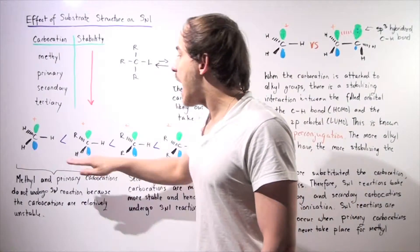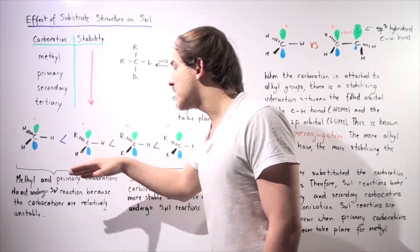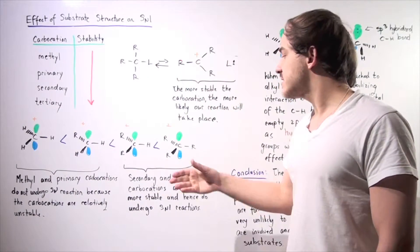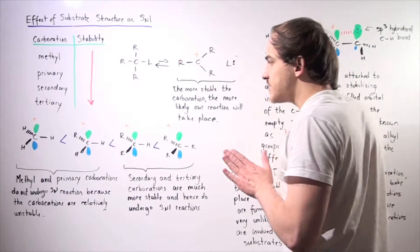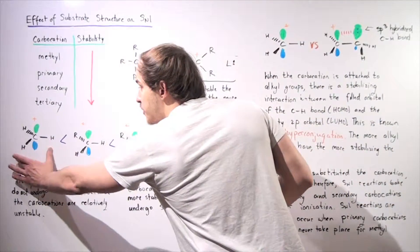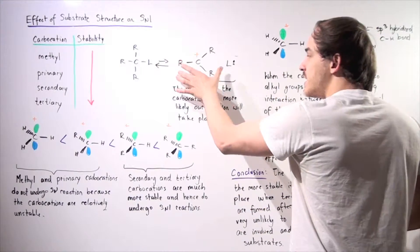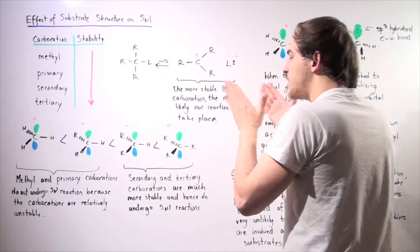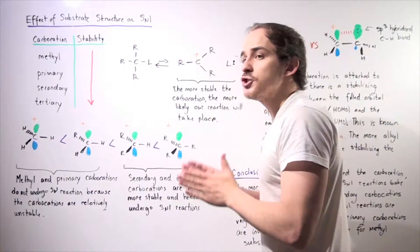So that means our methyl carbocations are less stable than primary, which are less stable than our secondary, and in turn less stable than our tertiary. So if we take our methyl and compare it to our tertiary, if we place a methyl in here and then a tertiary, and we compare the rates of reaction, this reaction with the tertiary will be much more likely.